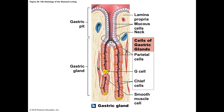Now we have the beginning of protein digestion — protein digestion begins in the stomach where it's acidic. Chief cells secrete pepsinogen; parietal cells secrete HCl. Parietal cells also secrete a substance called intrinsic factor, which binds to vitamin B12. You have to have vitamin B12 bound to intrinsic factor to absorb it. Without enough B12, you end up with an anemia called pernicious anemia.